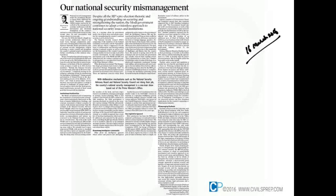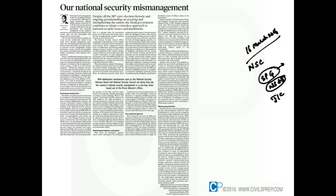The first article is related to the national security architecture in the country. During the Vajpayee era, the National Security Council was constituted and it has three important parts: the Strategic Policy Group, below that the National Security Advisory Board, and the Joint Intelligence Committee. The Strategic Policy Group is involved with the core of decision making, consisting of secretaries and certain military officials.